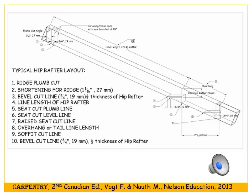One more thing to remember: the hip rafter runs at a 45 degree angle, and therefore its edges will sit a little above the plane of the tops of the common rafters. So we'll either have to plane that edge down, or take the entire rafter and drop it a little bit so the edge is perfectly in the same plane as the tops of the common rafters.